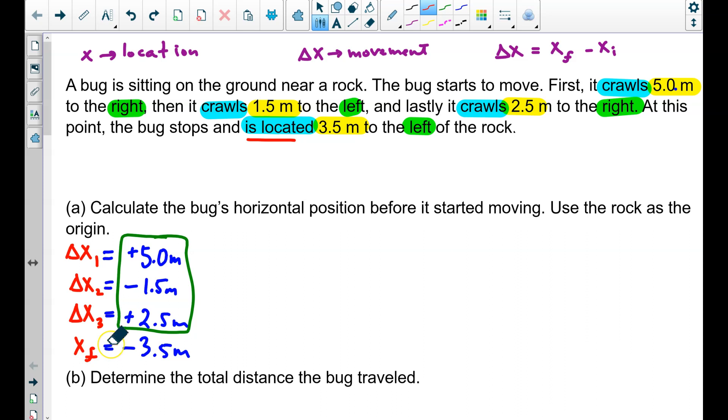Now that we have these values, we can solve. We use the equation delta x is equal to x final minus x initial. And we see, we're looking to calculate the horizontal position before it starts moving. Find the position before. Find x initial. That's our unknown. And so, we use this equation here.